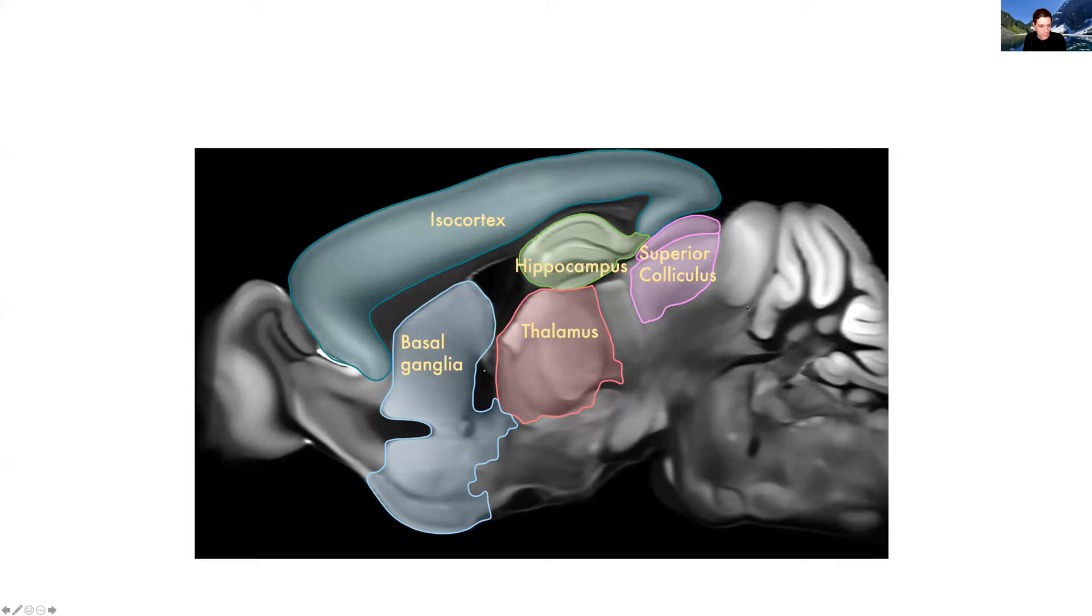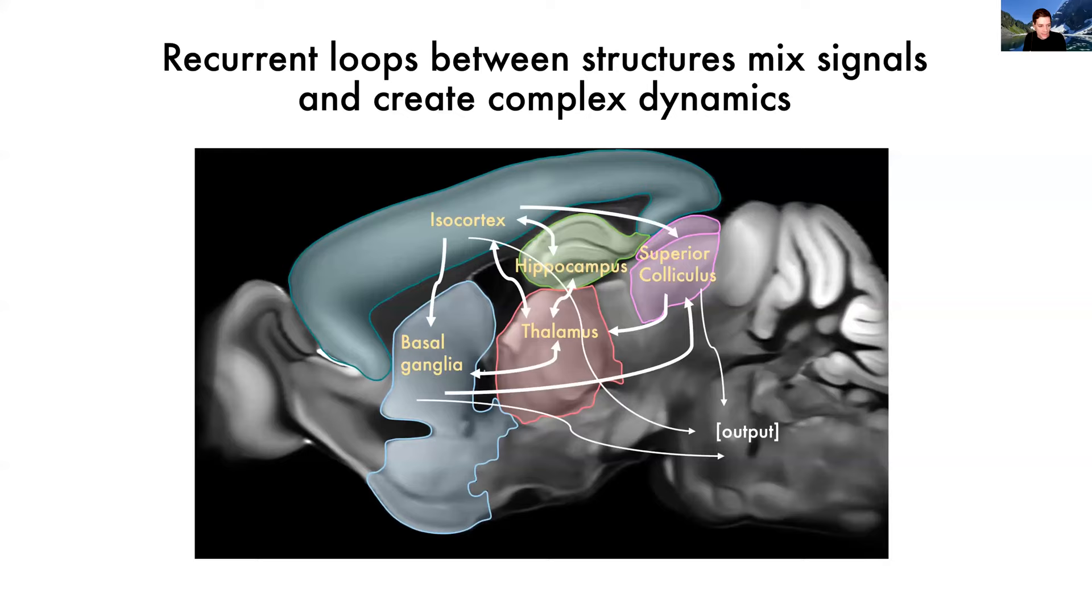If we're trying to understand how the brain does any particular behavior and we look first at the anatomical connectivity between these regions, I think the real challenge and the problem is that these anatomical connections form loops, that there are connections from one region to another and then back to that region or via some other path back. And so you get multiple interwoven recurrent loops.